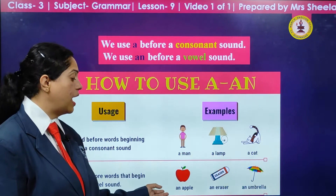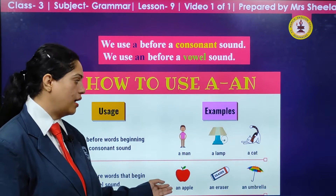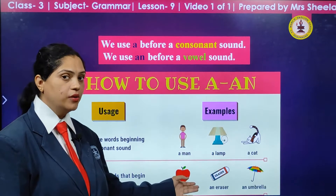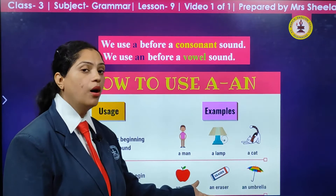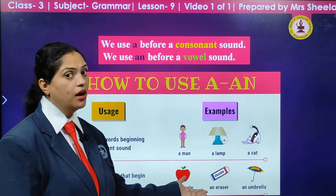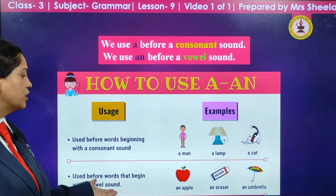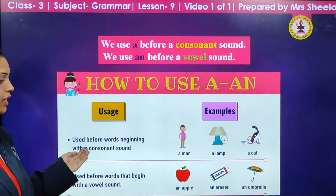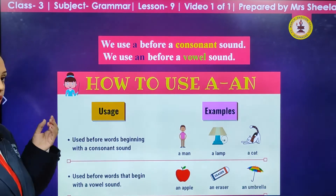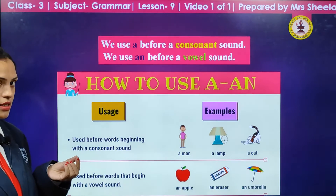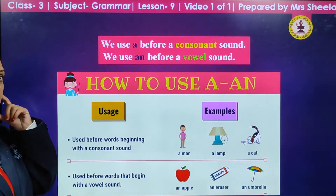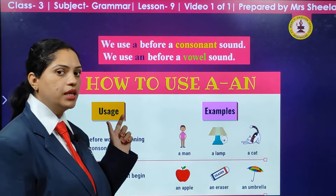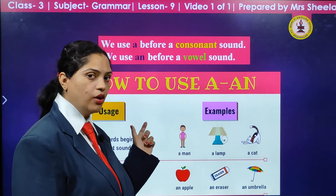For example, an apple — A; an eraser — E; an umbrella — U. These words are not only beginning with the letters A, E, U, but they also have the sound of vowels. They have vowel sound.